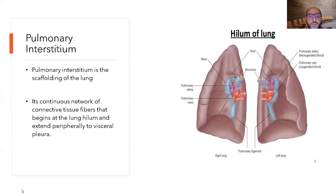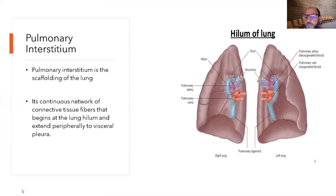We will start with the pathology. Each time we discuss anatomy, we never discuss the pulmonary interstitium. The pulmonary interstitium is the scaffolding of the lung — it's made from connective tissue beginning from the lung hilum all the way to the visceral pleura.